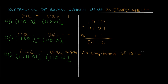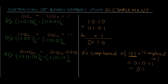So again, 2's complement of 101 is equal to its 1's complement plus 1. We have 1010, so the 1's complement would be 0101, and we just need to add one more, so that would be 0110. So 2's complement of 101 is equal to 011. It's pretty simple to calculate 2's complement and 1's complement.